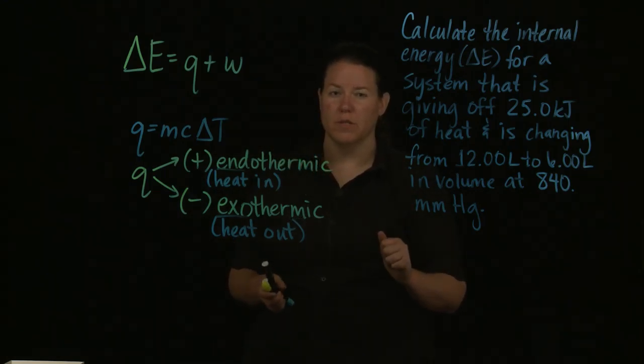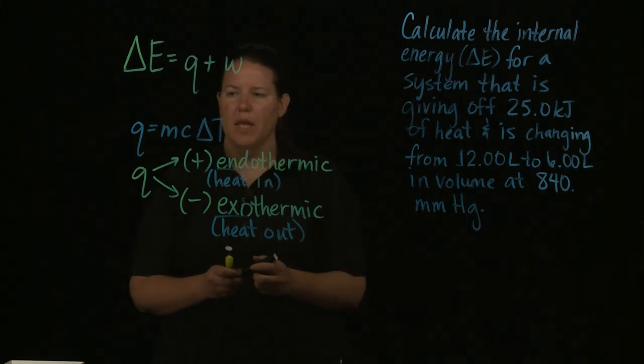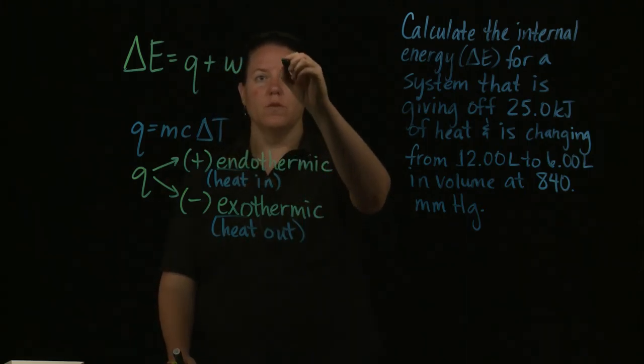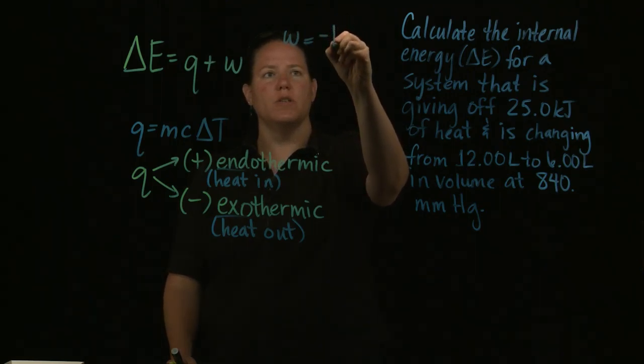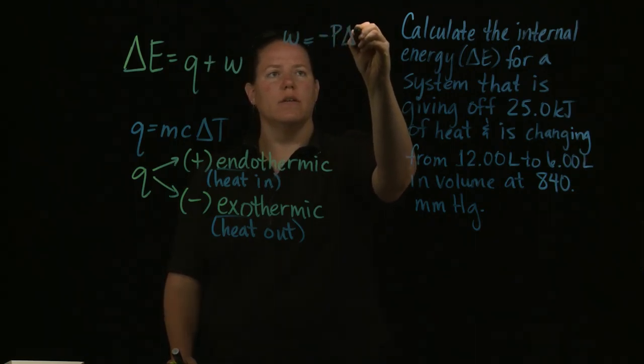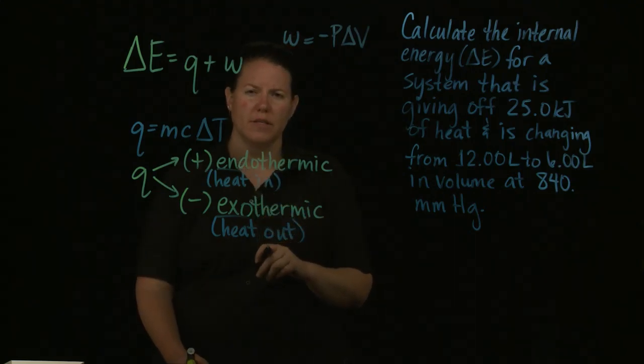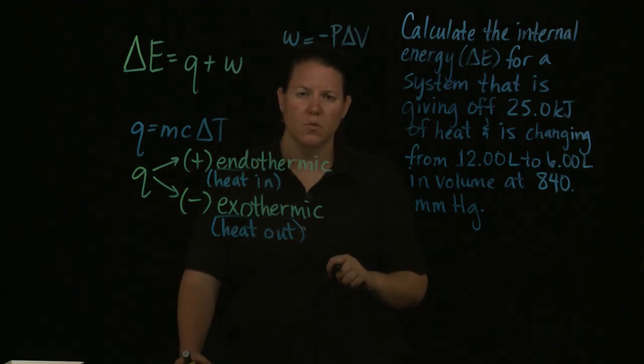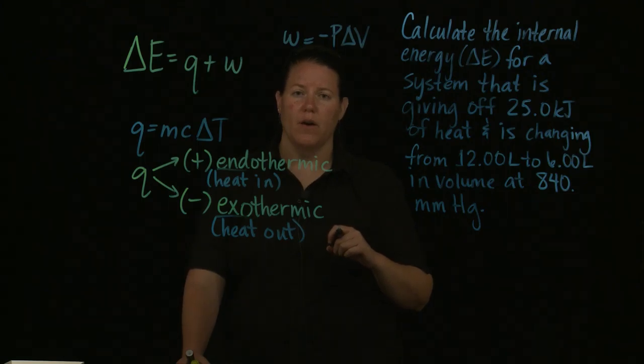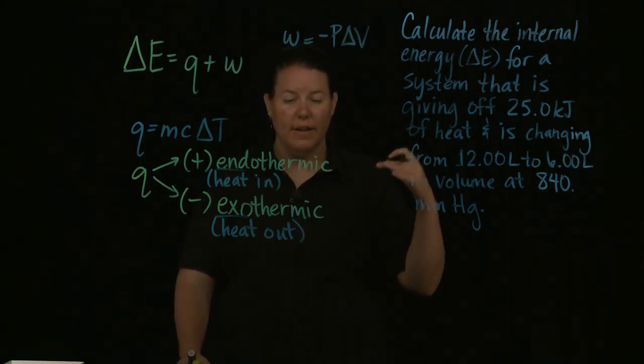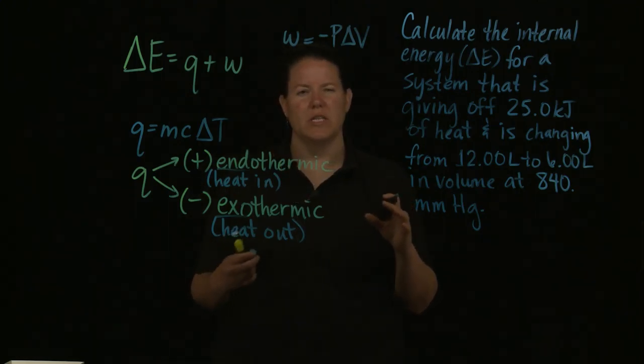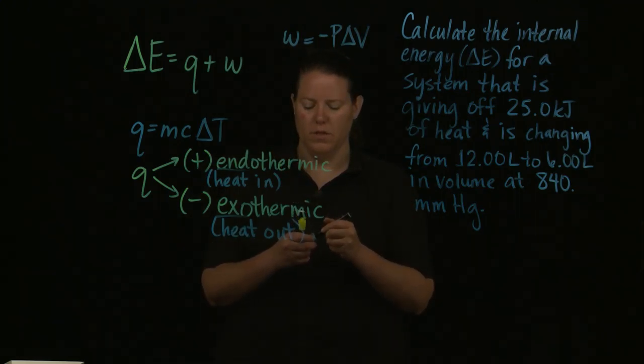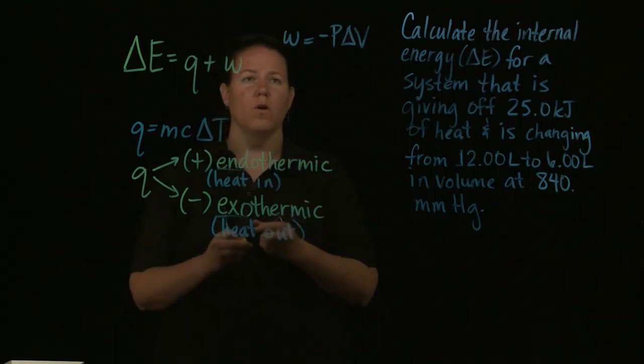For work, we have a new equation: W = -PΔV. This is assuming that the work being done on the system is somehow changing the volume, which means you have to have a container that allows you to have volume changes. It's a very specific case of what we're talking about here when you think about work.